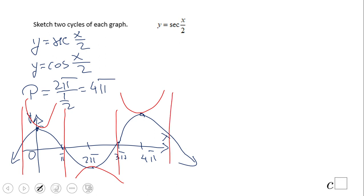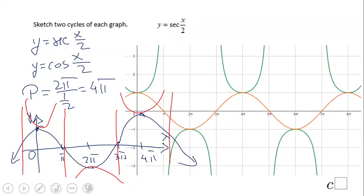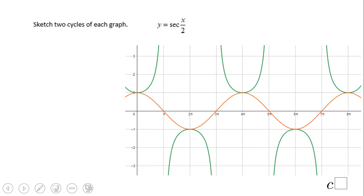If you have something like that for secant of x over 2, the red graph, that will be good. In fact, you can see the exact graph right here and you notice asymptotes at π, 3π, 5π and so on. You see this one is cosine of x over 2 and the green one is secant of x over 2.